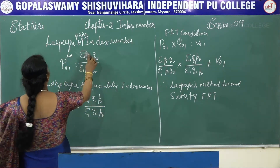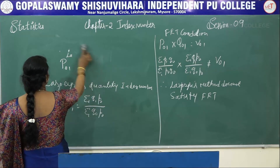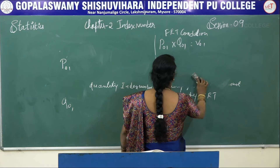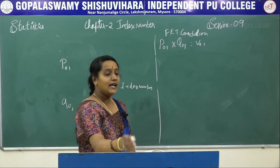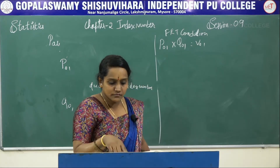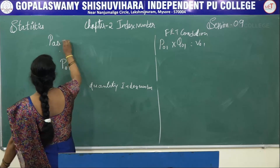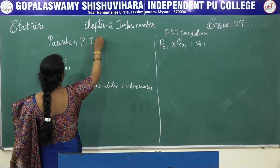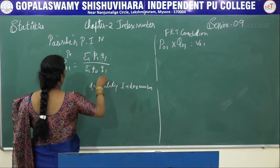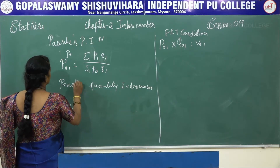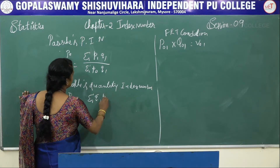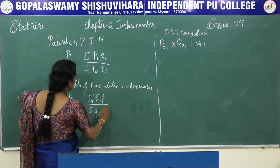The second method is Paasche. The Paasche price index number is: summation of P1×Q1 divided by summation of P0×Q1. The Paasche quantity index number is: summation of Q1×P1 divided by summation of Q0×P1.